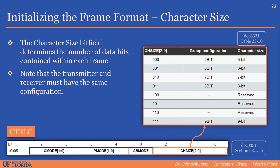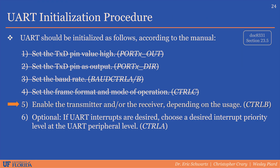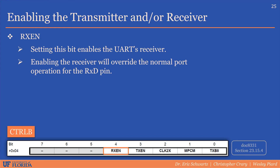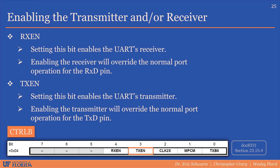The last mandatory part of the initialization is to enable the transmitter and/or the receiver, depending on the use case. This is done using the Control B register. In some applications it may not be necessary for both the transmitter and the receiver to be enabled, so they can be done independently. The Control B register contains two bits: RXEN, which enables the receiver, and TXEN, which enables the transmitter. Both of these bits, when set, will override the normal pin function of the receive and transmit pins.